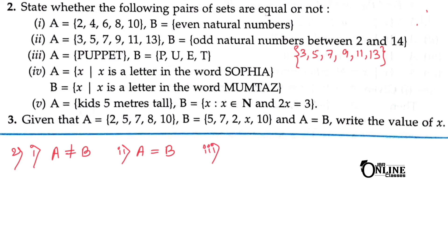Third pair: A = letters in the word 'puppet' and B = letters in the word 'puet'. In a set, elements are not repeated. So the elements of A and B are exactly equal, meaning A equals B.